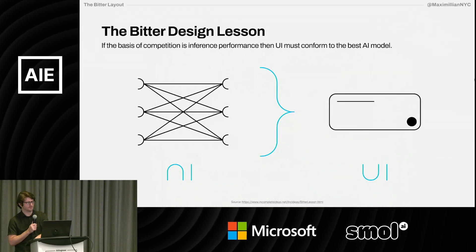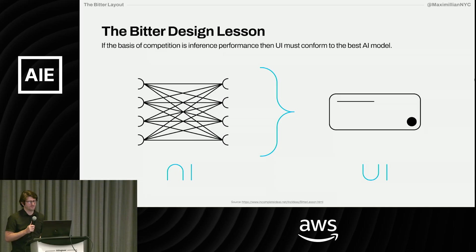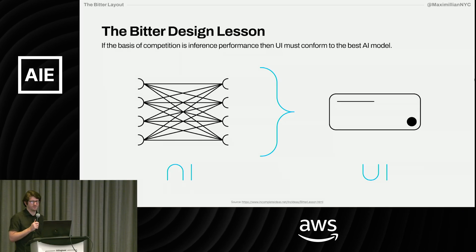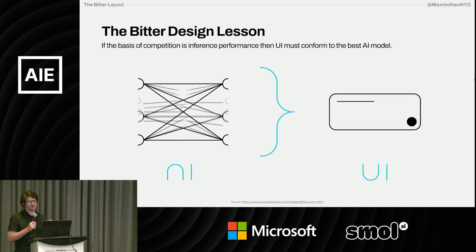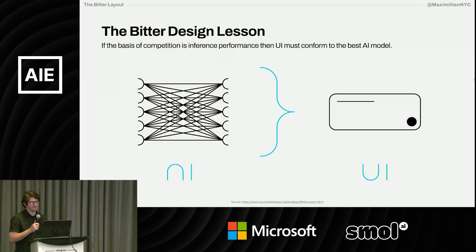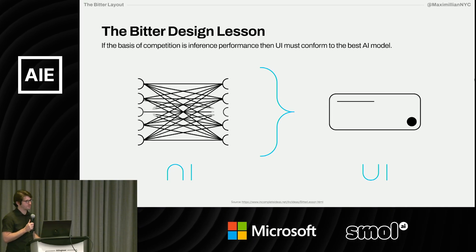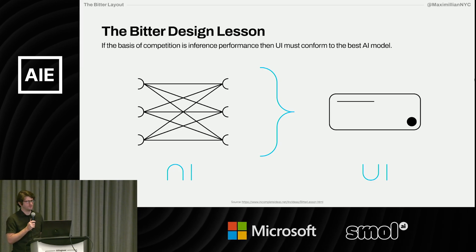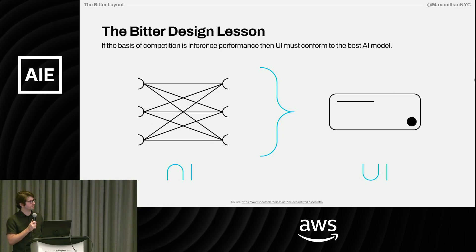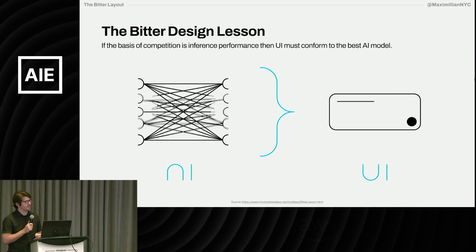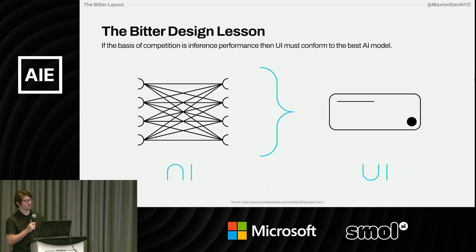The Bitter Lesson actually leads us to what I'll call the Bitter Design Lesson: if the basis of competition is inference performance, then the UI itself must be primarily focused on conforming to the next model. Said plainly, if the model is not commoditized, it's actually the interface that's the commodity now. Until models overshoot user needs, the primary job of every interface has to be figuring out how to conform to the next model's capabilities.